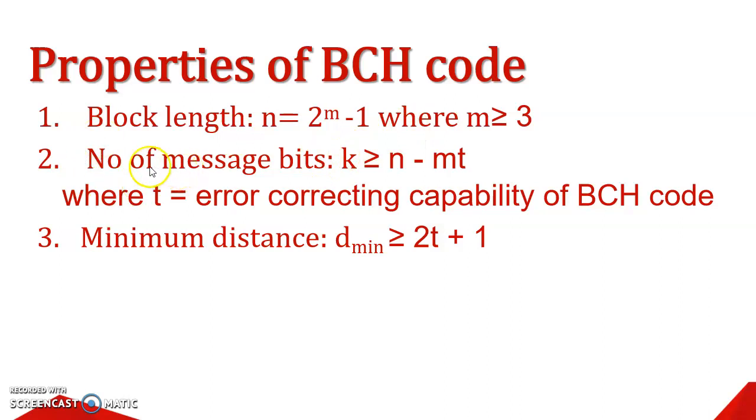Next, number of message bits: k ≥ n - mt, where n is the block length, m is the integer which we are using here, and t is the error which I specified in our previous slide. That is the number of errors which a BCH Code can detect and correct.